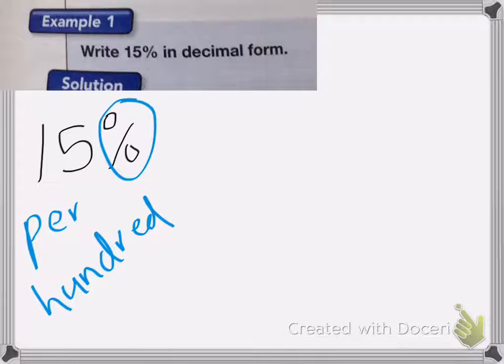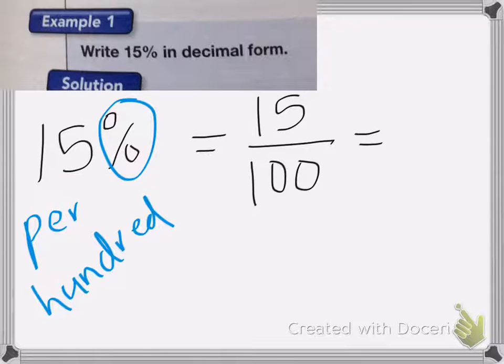Okay, so let's first write this as a fraction. So 15% is the same as 15 per hundred. Okay, now I can turn this into a decimal place because I know that this 15 up here needs to be in the hundredths place value.